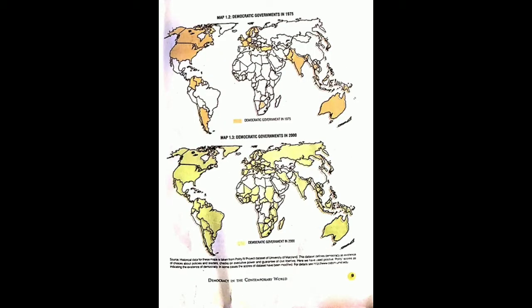In this chapter, we have three maps on page number 8 or 9. Map number 1 shows democratic governments in 1950. Map number 2 shows democratic governments in 1975. Map number 3 shows democratic governments in 2000.